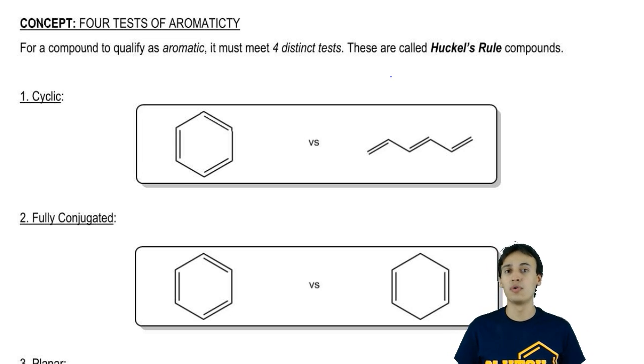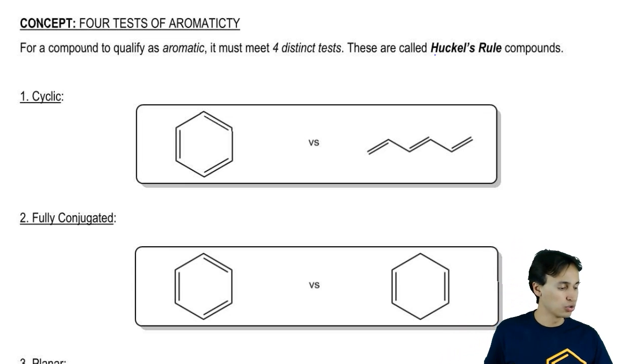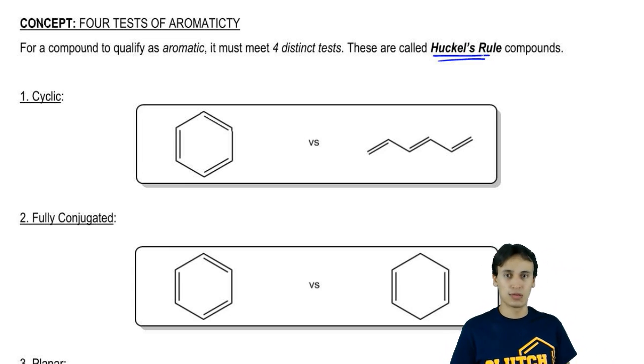Now as a side note, these molecules, if they are aromatic, are going to be called Huckel's Rule compounds for reasons that we'll discuss later.